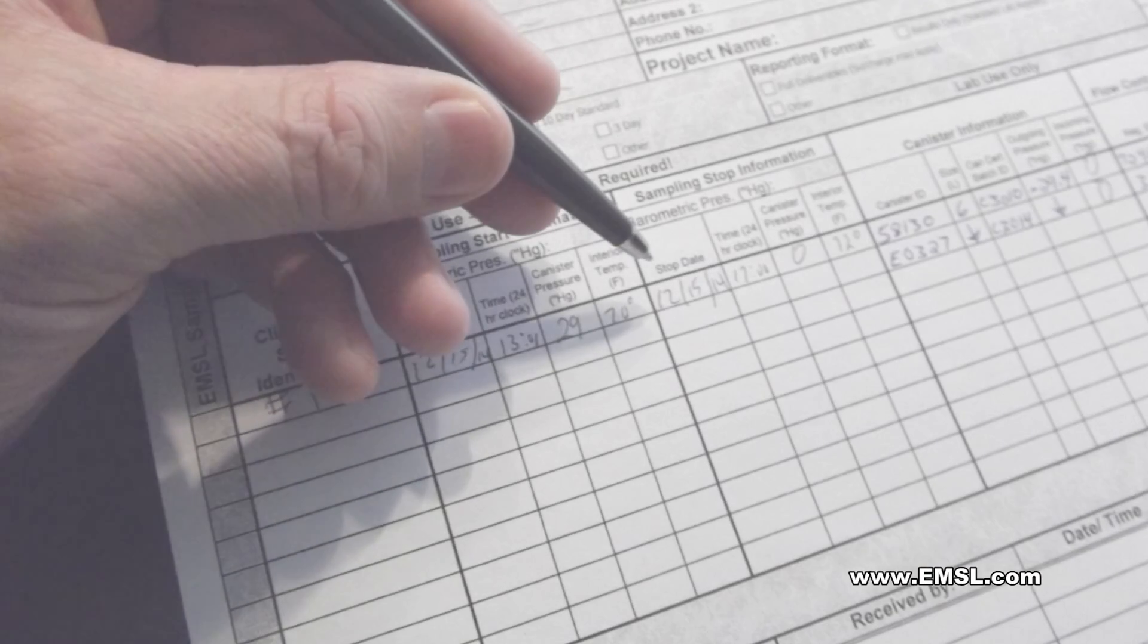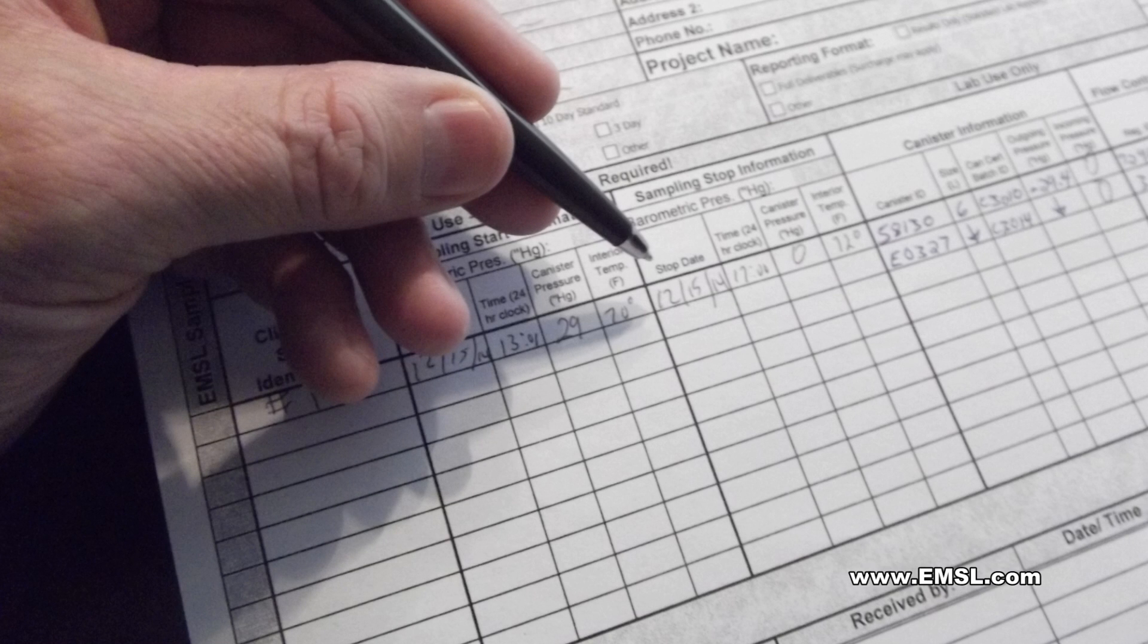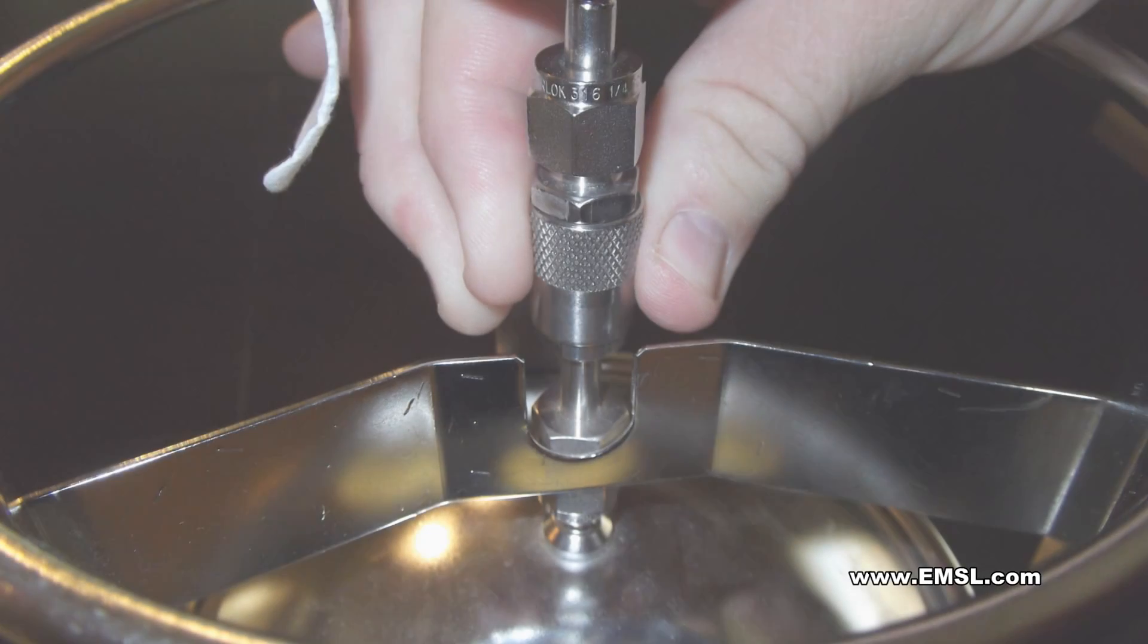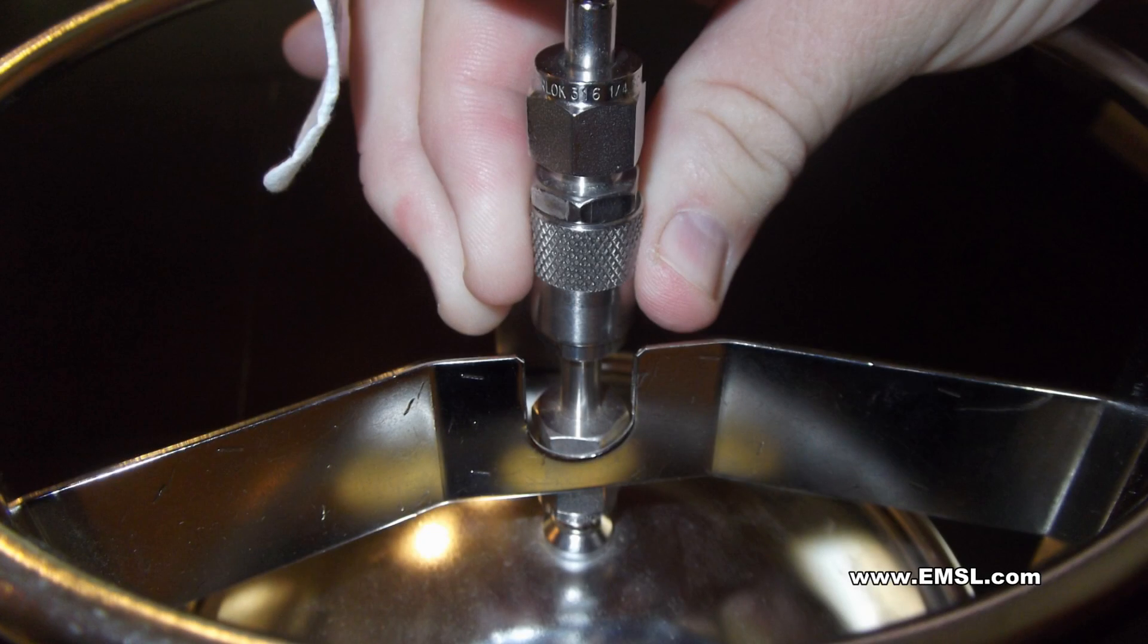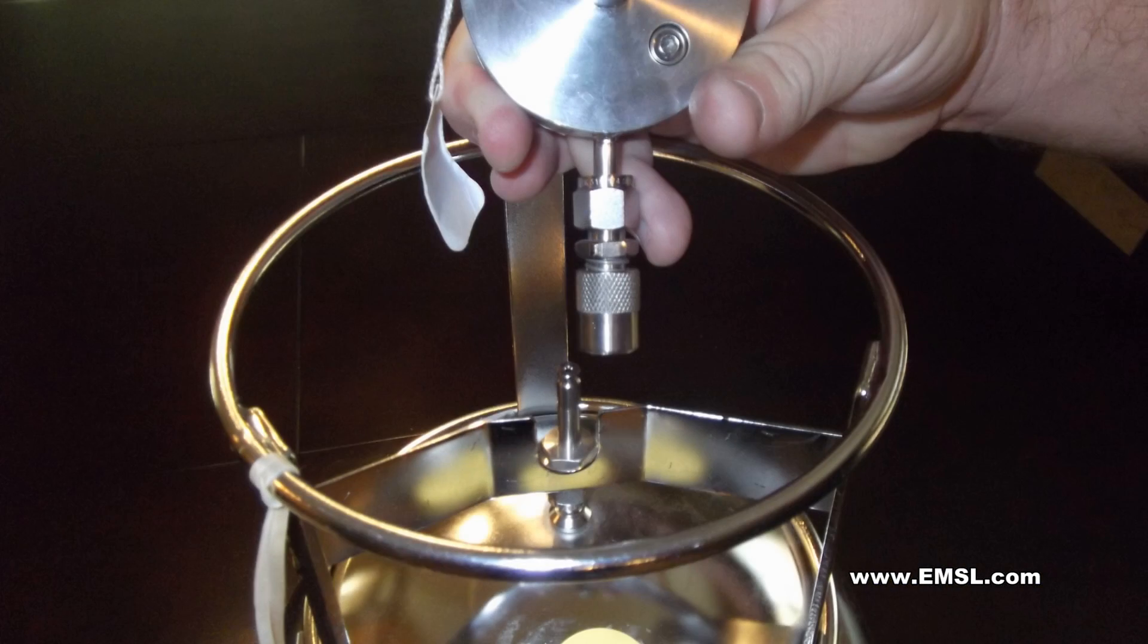After the sampling time has elapsed, record the final pressure, date, and time sampling was completed on the chain of custody form. To stop sampling, uncouple the QT valve by pulling back the sleeve on the QT valve body and remove it from the canister.